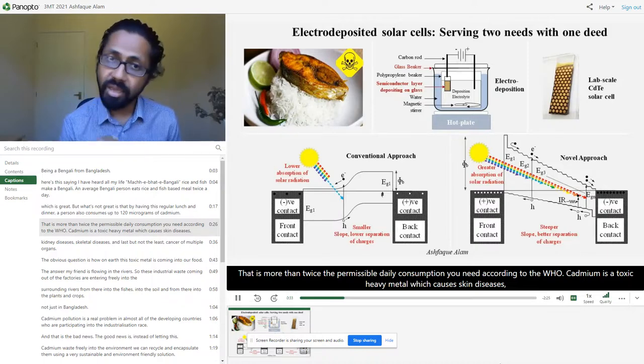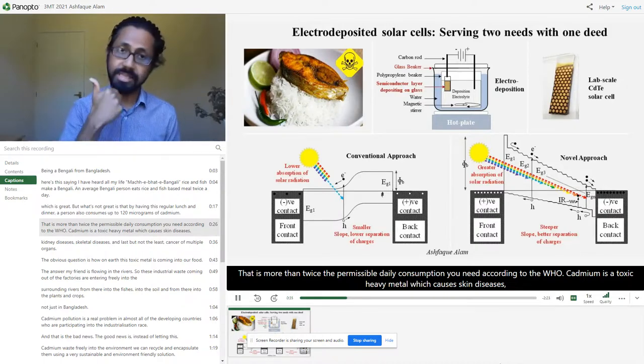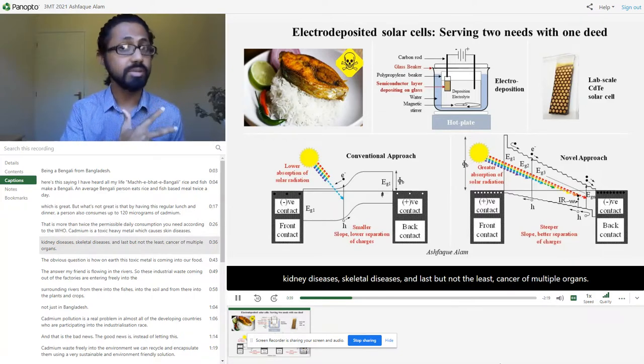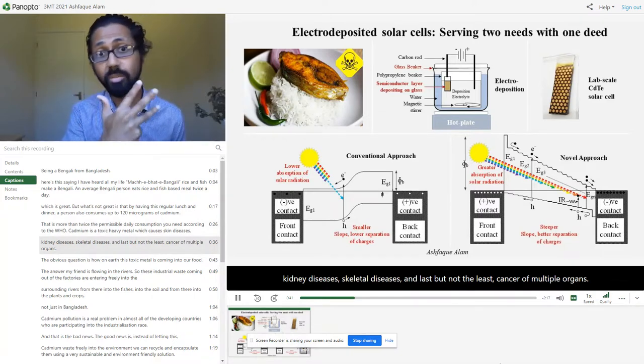Cadmium is a toxic heavy metal which causes skin diseases, kidney diseases, skeletal diseases, and last but not the least, cancer of multiple organs.